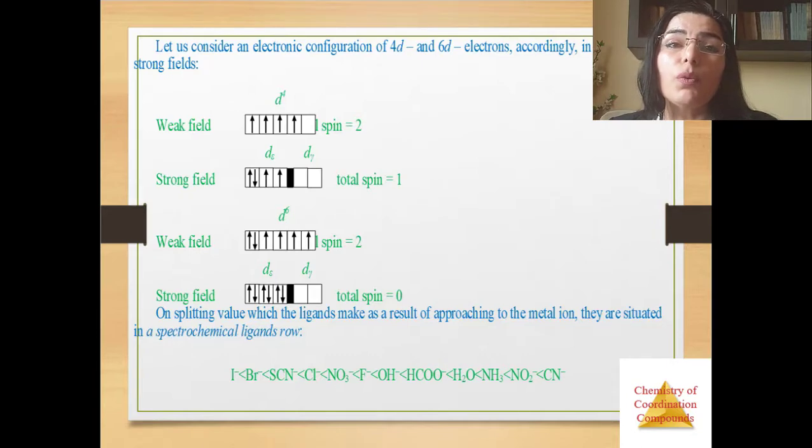If the ligand has a weak field and splitting is small, P more than delta E, then the electrons are arranged on the upper levels. In this case, a high spin complex is formed and Hund's rule dominates.